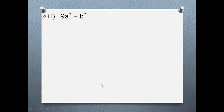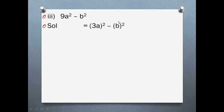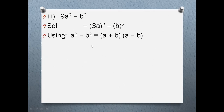Third part: 9a² − b². Both values are perfect squares with a minus sign between them. Using a² − b² = (a + b)(a − b), we have (3a)² − b², so the answer is (3a + b)(3a − b).